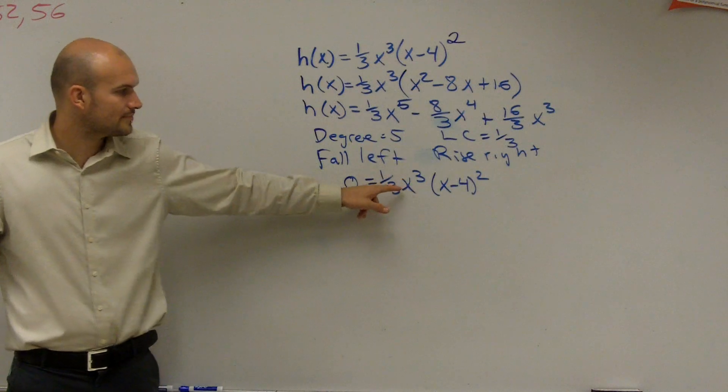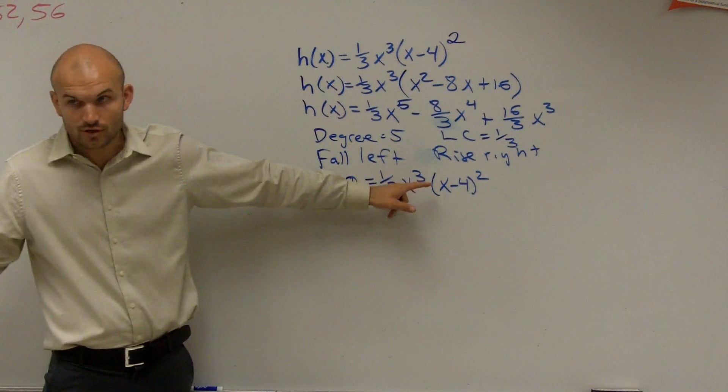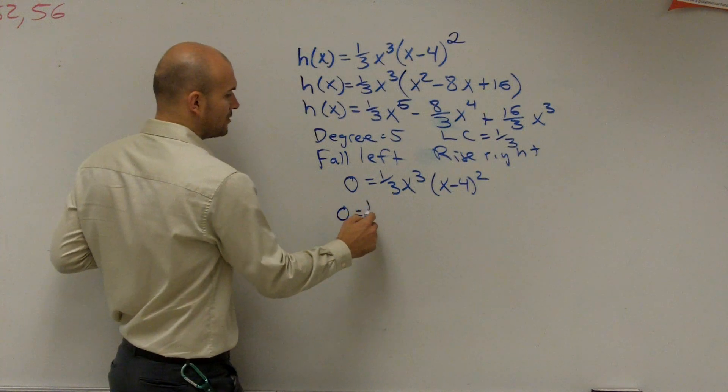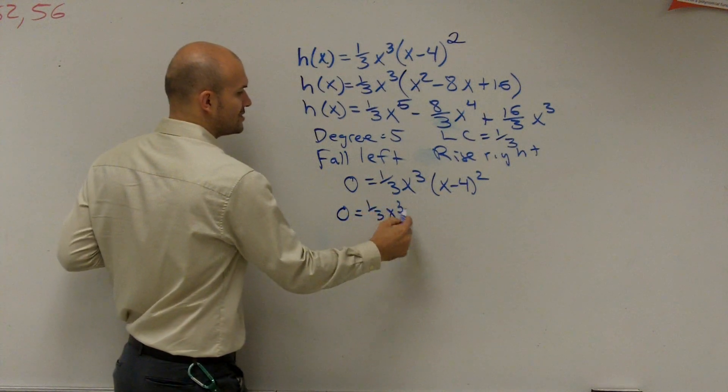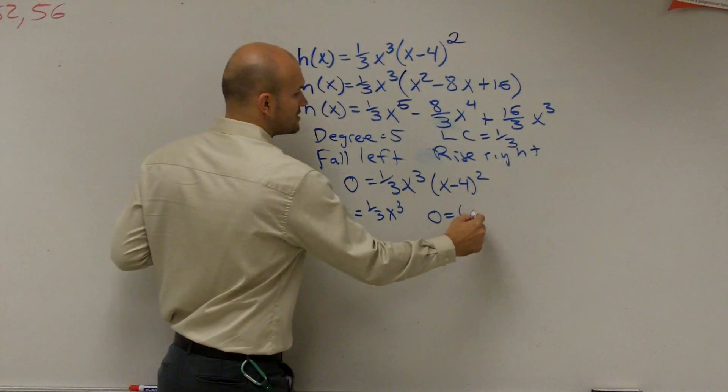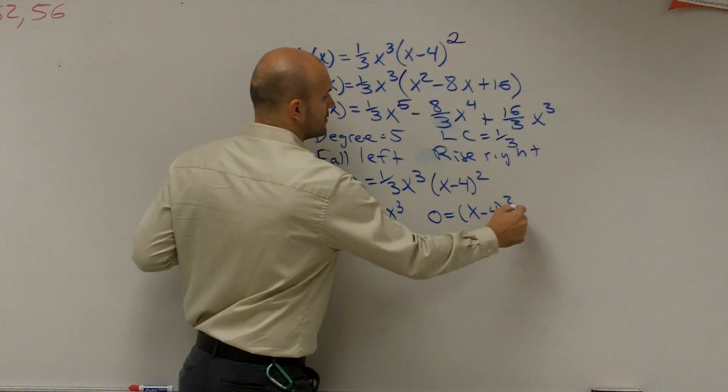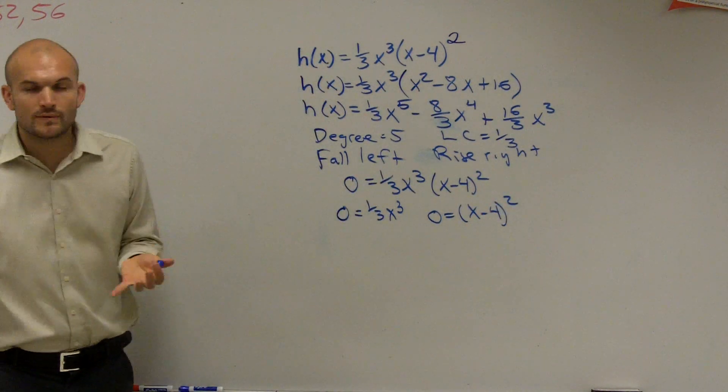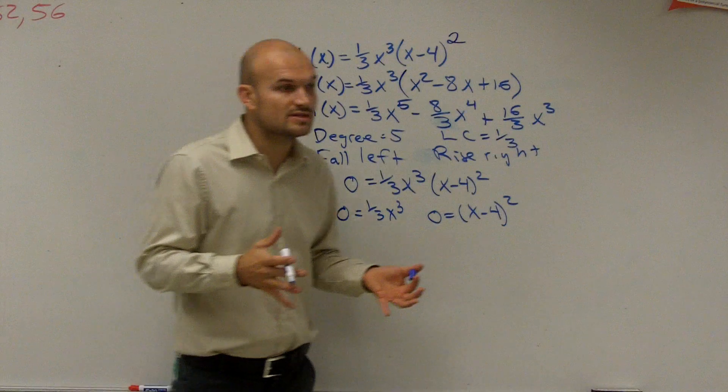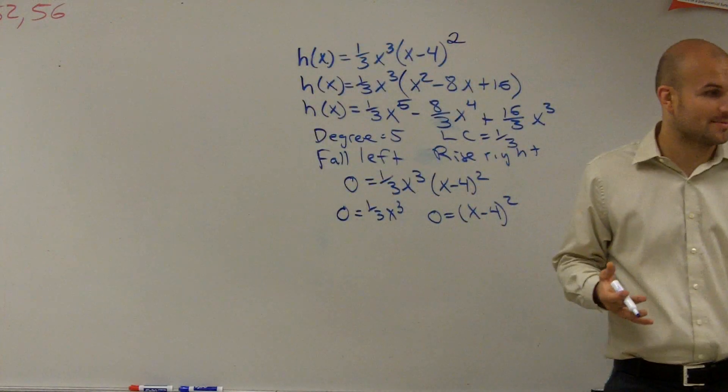This is going to be rewritten as x minus 0 cubed, if you like. What we can do is say 0 equals one-third x cubed, and 0 equals x minus 4 squared. Remember when we have two factors multiplied to give you 0, you apply the 0 product property.